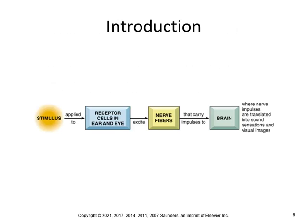Let's do a little introduction. Light and sound applied to sensory organs of the eye and ear activate receptors that send signals to the appropriate brain regions in the cortex, where they are translated into images and sounds. You get the stimulus, whether you're seeing something or hearing something. Then there are special receptors in the cells in the eye and the ear. They get excited and the nerve fibers carry the impulses to the brain, which then interprets whether it's hearing a certain word or seeing a certain thing.